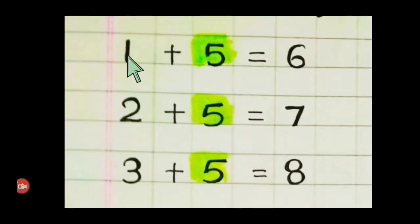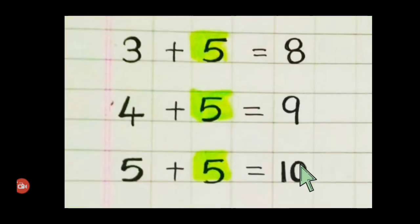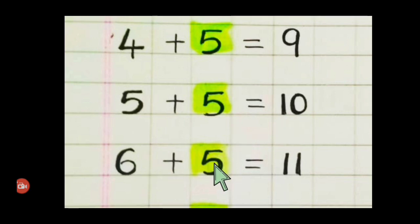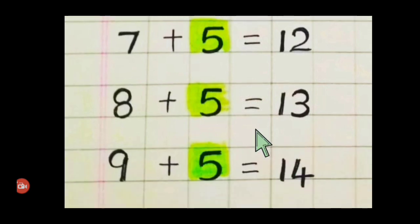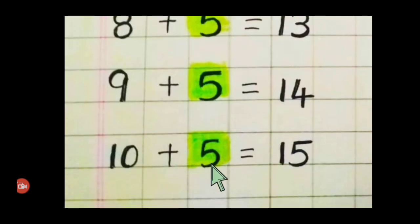One plus five is six. Two plus five is seven. Three plus five is eight. Four plus five is nine. Five plus five is ten. Six plus five is eleven. Seven plus five is twelve. Eight plus five is thirteen. Nine plus five is fourteen. Ten plus five is fifteen.